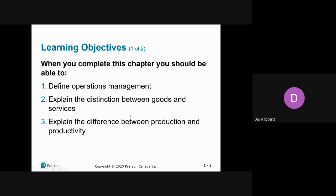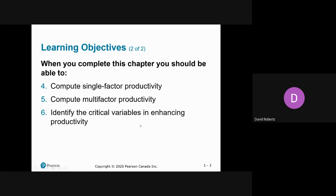We will talk about what operations management is. Operations management is also often referred to as supply chain management. We'll talk about some of the differences between goods and services. We're going to talk about the difference between production, which is how much you make, versus productivity, which is how many you make. We're going to calculate single and multi-factor productivity, and talk about variables that are enhancing or affecting your ability to be productive.